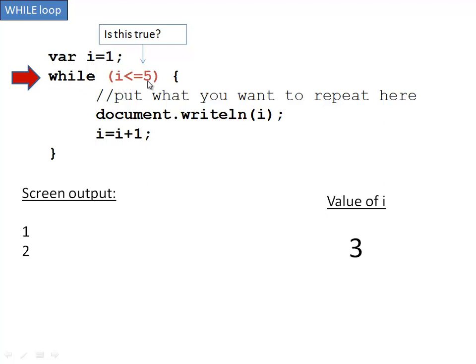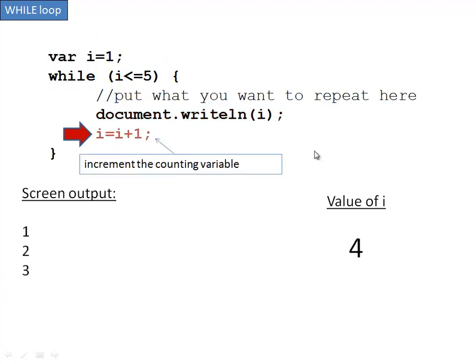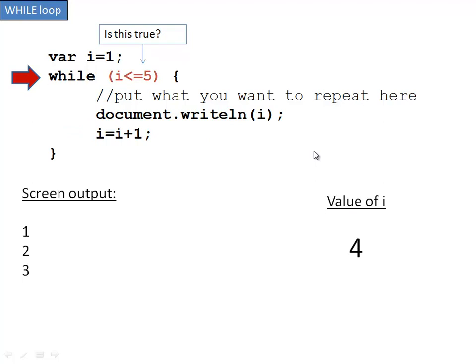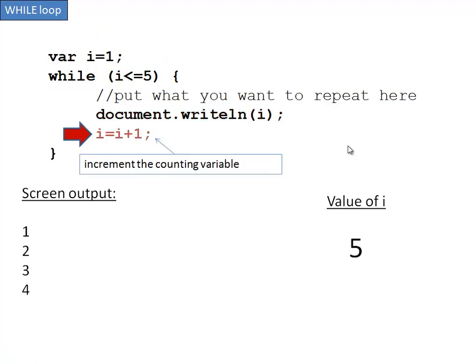So is 3 less than or equal to 5? Yes. So we write document.writeLine i, which is 3. And we add 1 to increment it to 4. Is this true? Yes, 4 is less than or equal to 5. We write 4, because we're writing i, and we add 1.